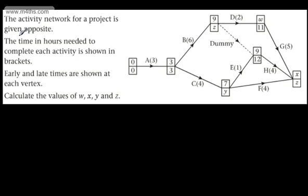We're told the activity network for a project is given. The time in hours needed to complete each activity is shown in brackets. Early and late times are shown at each vertex, and we're asked to calculate the values of W, X, Y, and Z. A network is a weighted graph — in this case the weight is the time in hours. The box on the top gives the early event time; the box on the bottom gives the late event time. Sometimes these will be side by side, so we'll have 0,0 then 3,3 then 7,Y — you need to be comfortable with different notations.